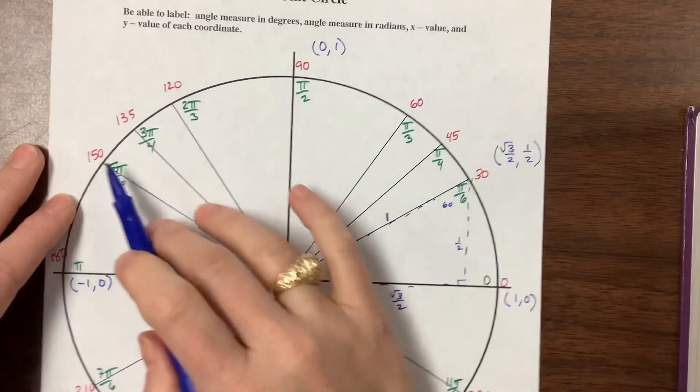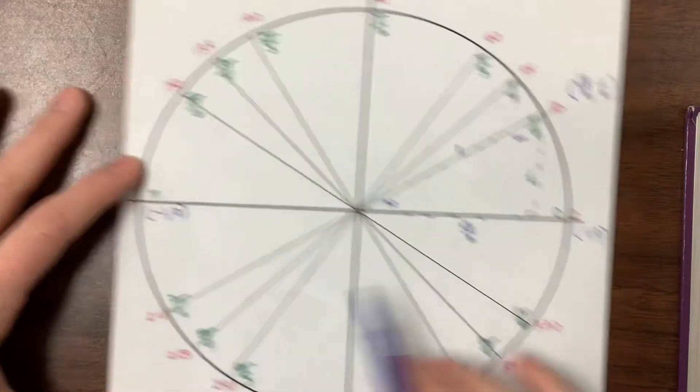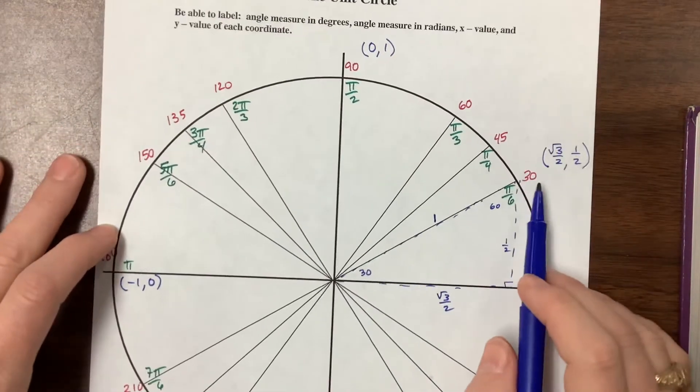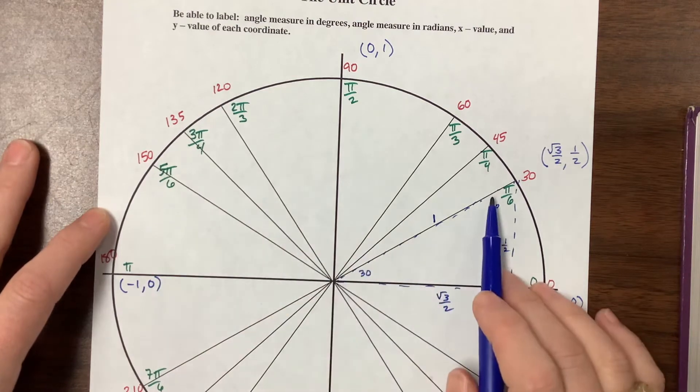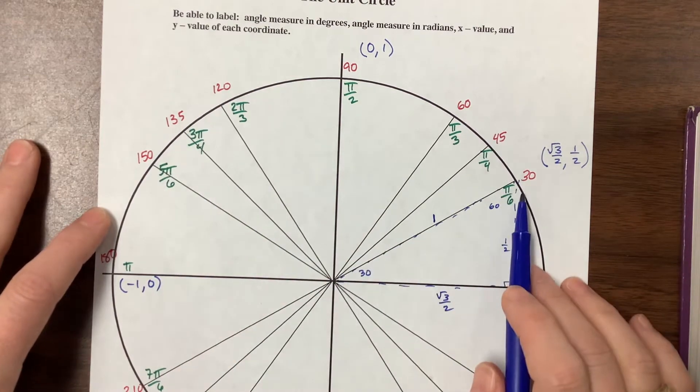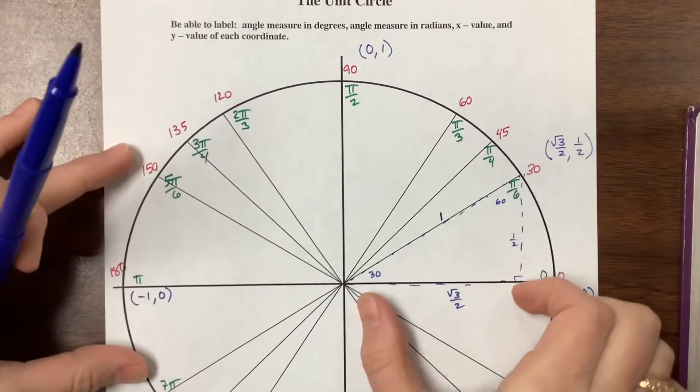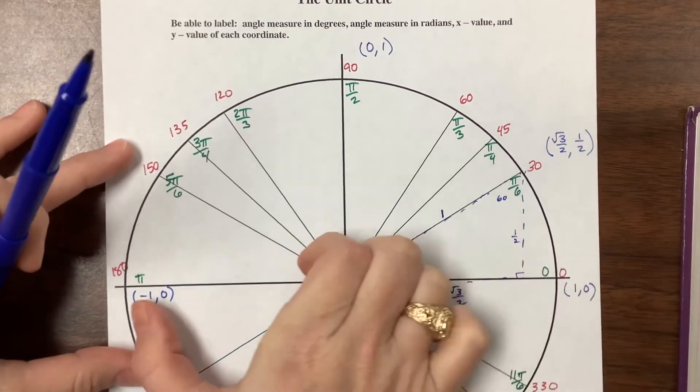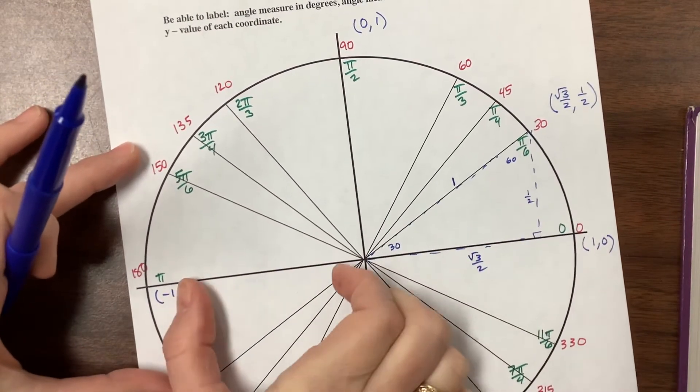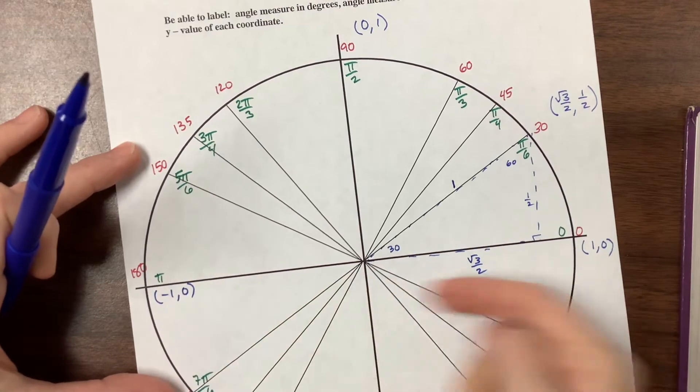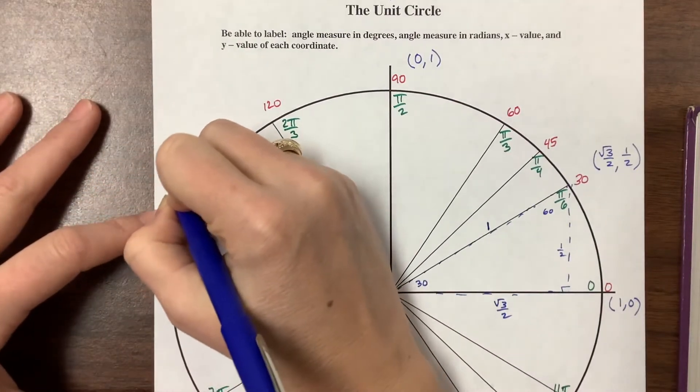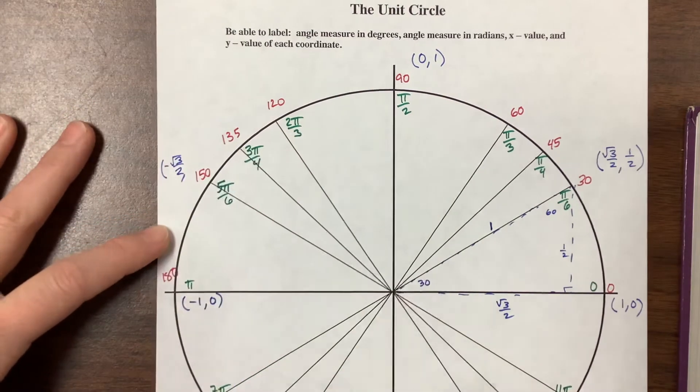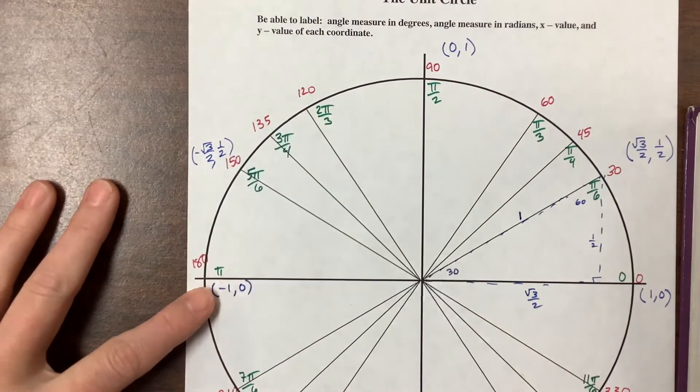Now we're going to use this as its reference angle and reflect it into the other three quadrants. If I come over here, 5π/6 has π/6 as its reference angle, and this is why we care about reference angles. This length for the x is the same as this length over here but it's just gone in the negative direction. So 5π/6 has -root 3 over 2 for its x value and positive 1/2 for its y.